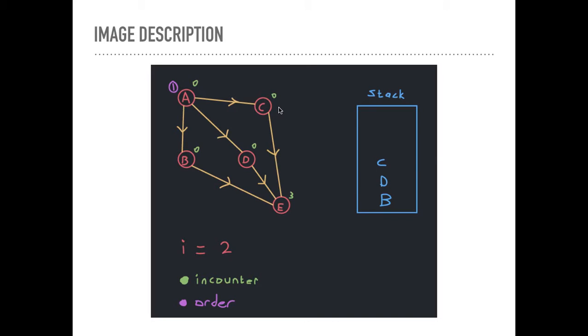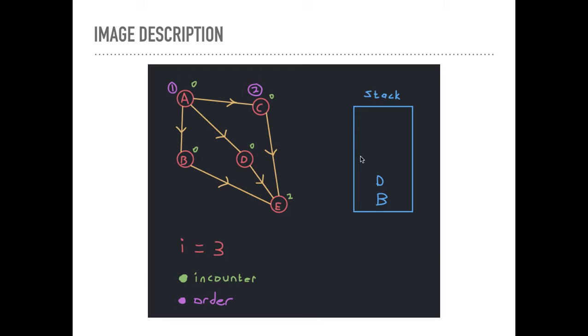And our while loop continues because the condition is while S is not empty. So while S is not empty, what do we do? We pop one off the stack. So the topmost element that we pop off was C. And we say number C as the i-th vertex. So it gets the number 2. And then we increment i to 3.